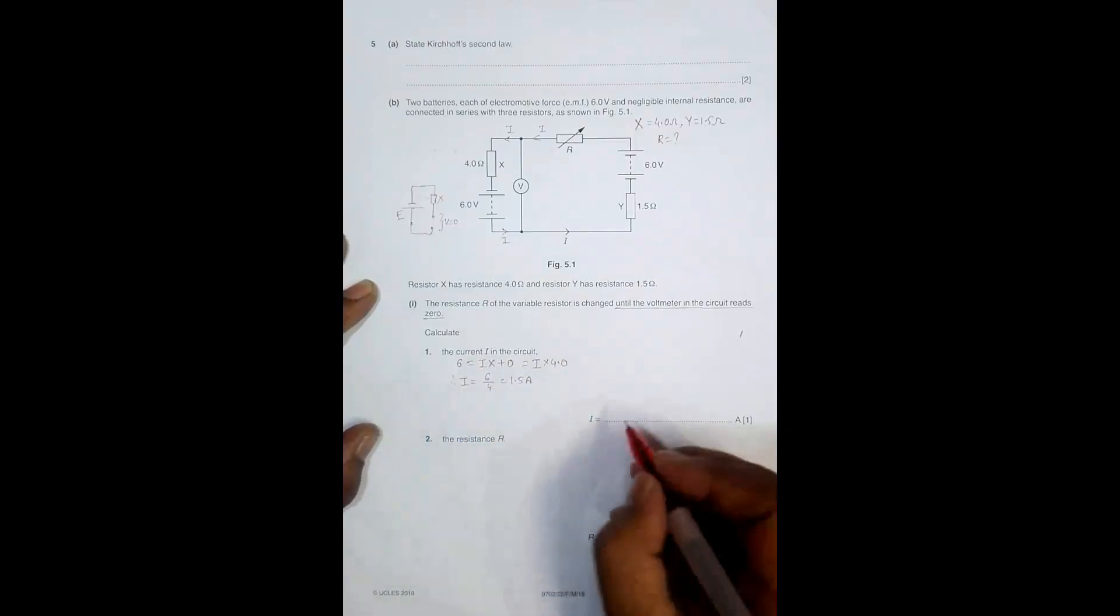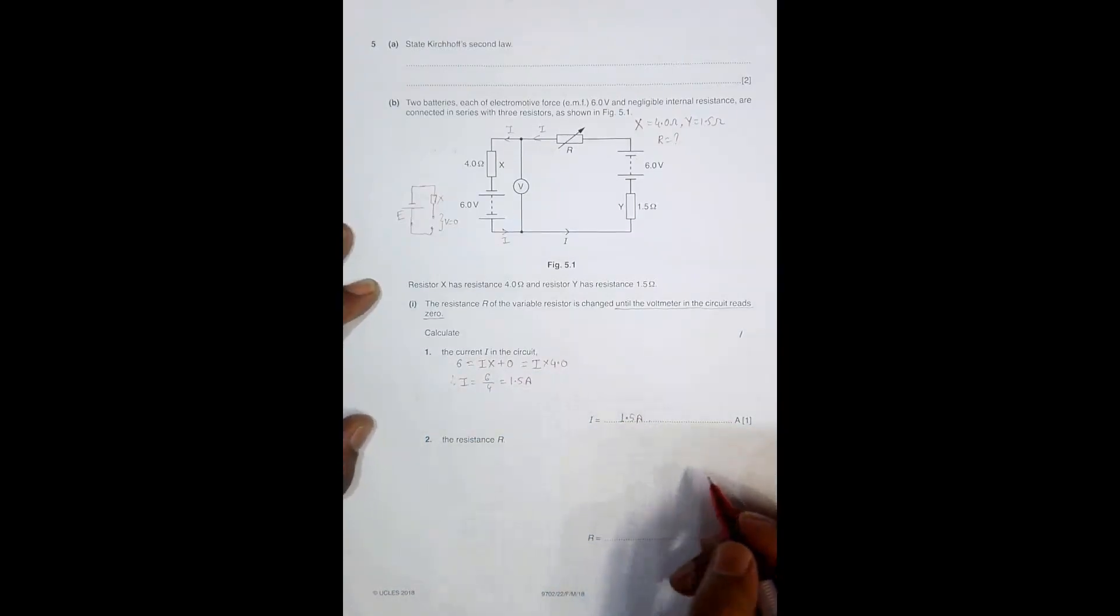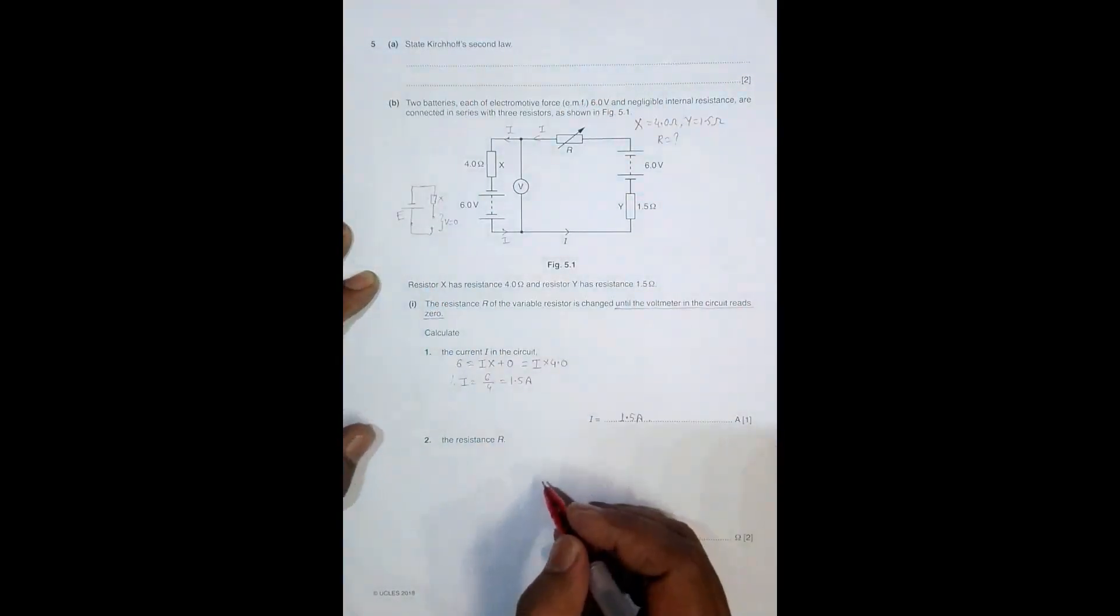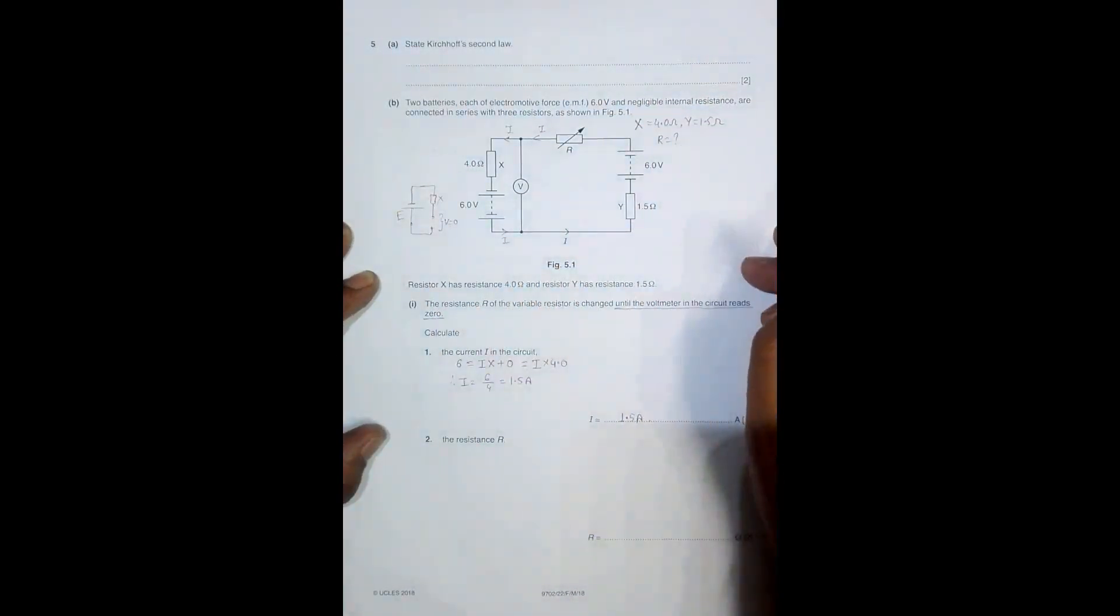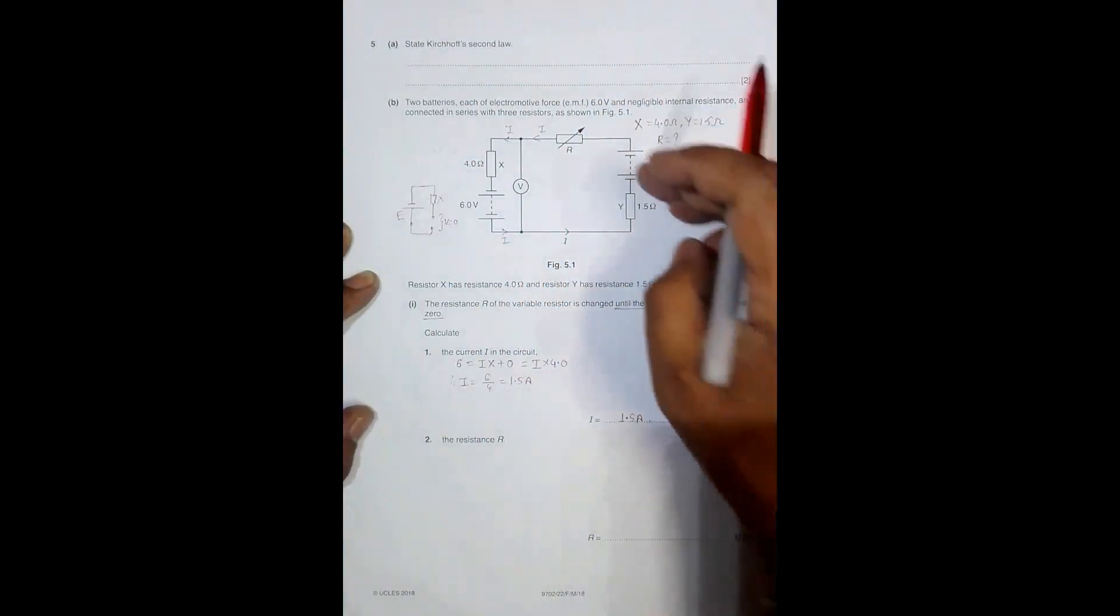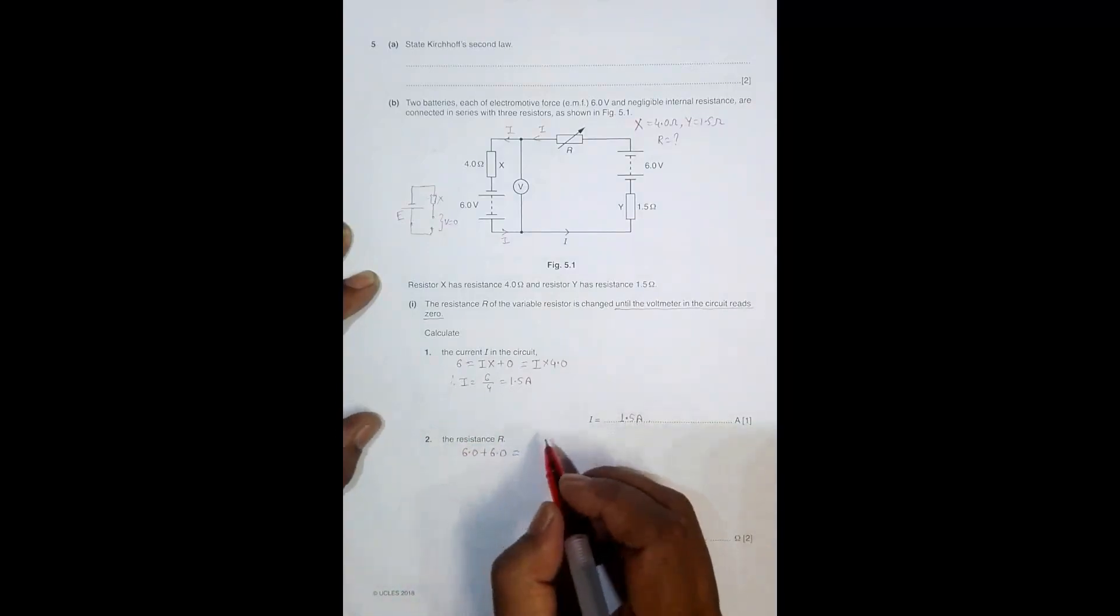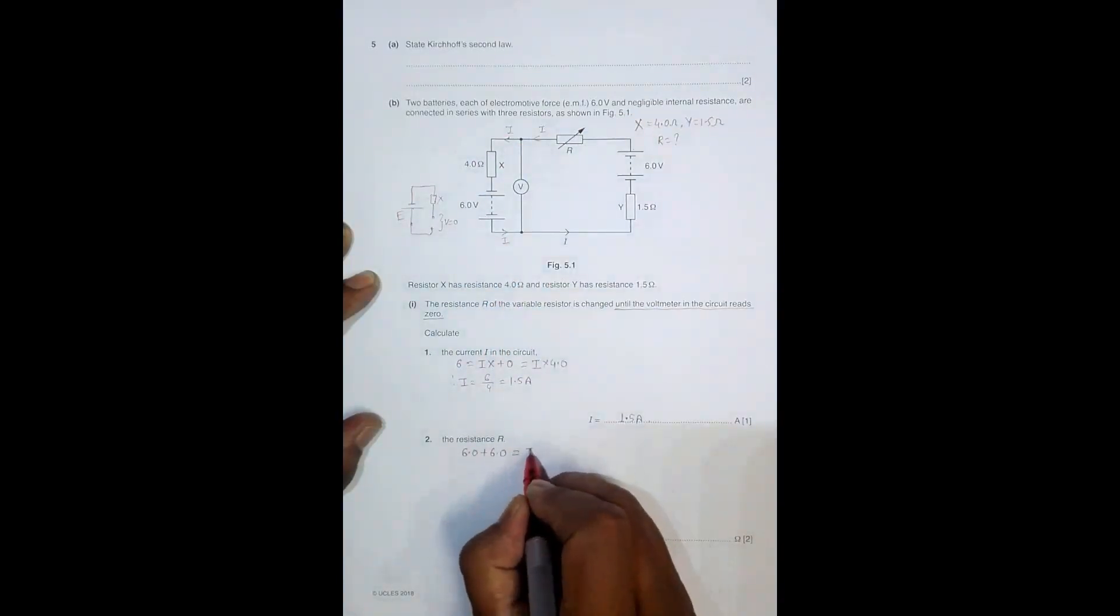Now I have to find this resistance R. I can consider the whole circuit. These two EMFs support each other or reinforce each other, so the total EMF will be 6.0 plus 6.0 equals 12 volts, which equals the sum of potential differences.